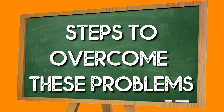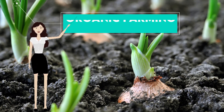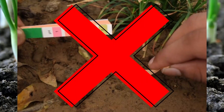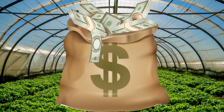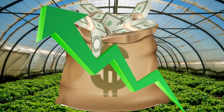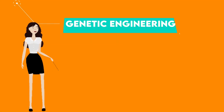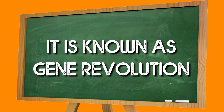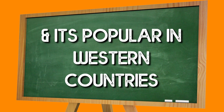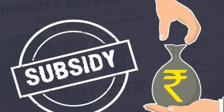Now let's discuss steps to overcome these problems. Number 1, we can practice organic farming, which will reduce pollution and land degradation. Number 2, since the Indian climate is diverse, we can practice horticulture, which will increase income and also decrease environmental degradation. Number 3, genetic engineering can be adopted to grow hybrid crops — this is called the gene revolution, which is very popular in Western countries. Number 4, government subsidies are also very helpful in this scenario.